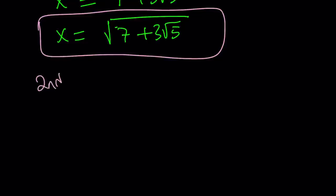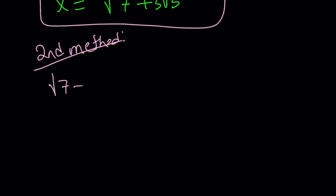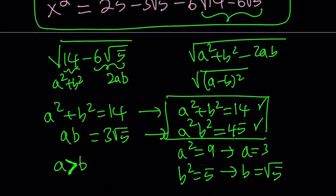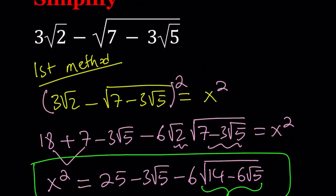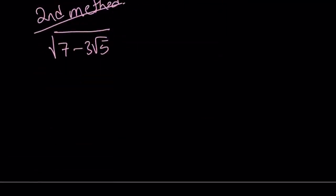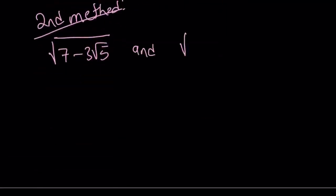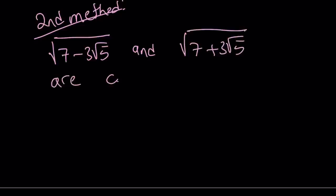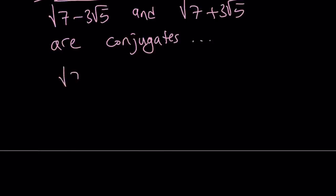Let's talk about the second method, which is different. Notice that square root of 7 minus 3 root 5 is part of our expression — the original expression was 3 root 2 minus that. So square root of 7 plus 3 root 5 and square root of 7 minus 3 root 5 are conjugates. Their square roots are conjugates, so we can add them and subtract them, as you'll see in a moment.